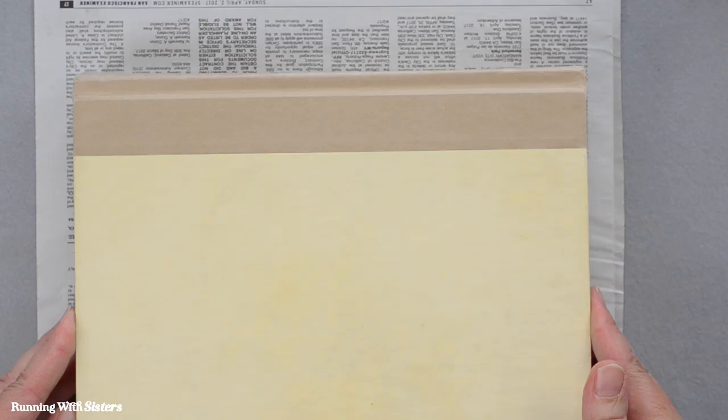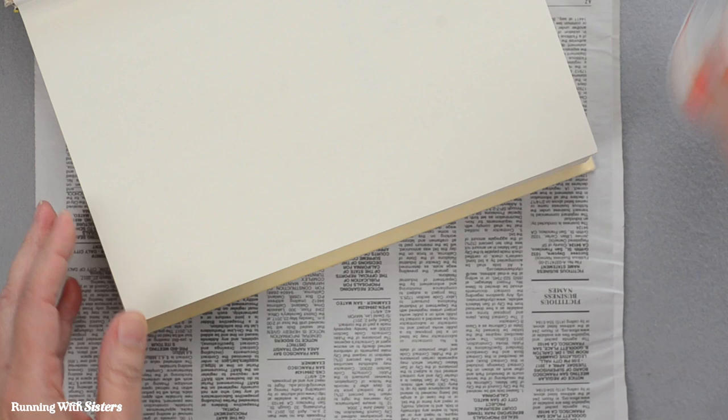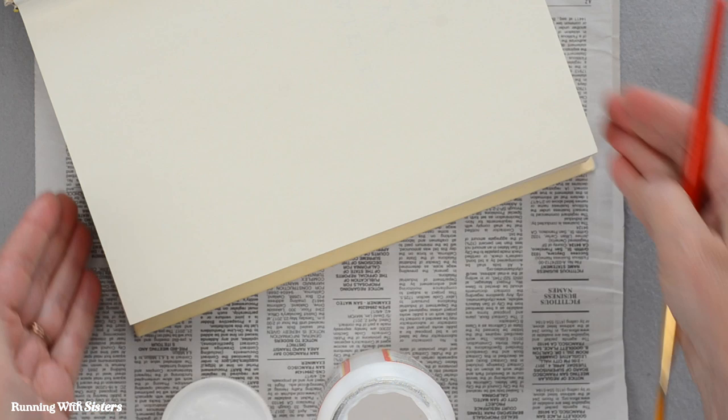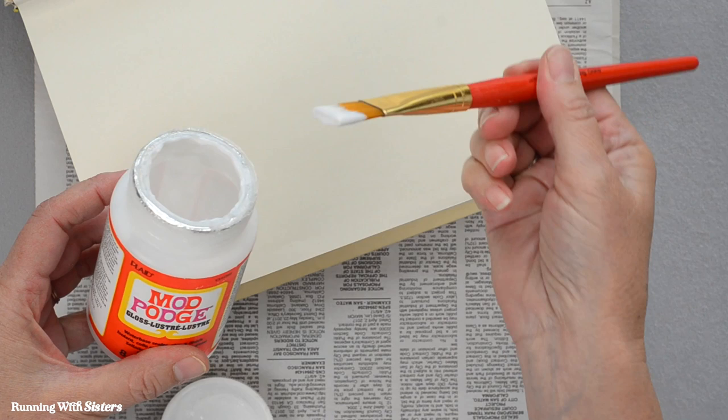The first step to hollowing it out is to paint the edges with Mod Podge. That's the edges of all these pages, and what that's going to do is hold all the pages together while you're cutting. It really creates the side of the box. We've just got regular Mod Podge here and a paintbrush craft paintbrush.